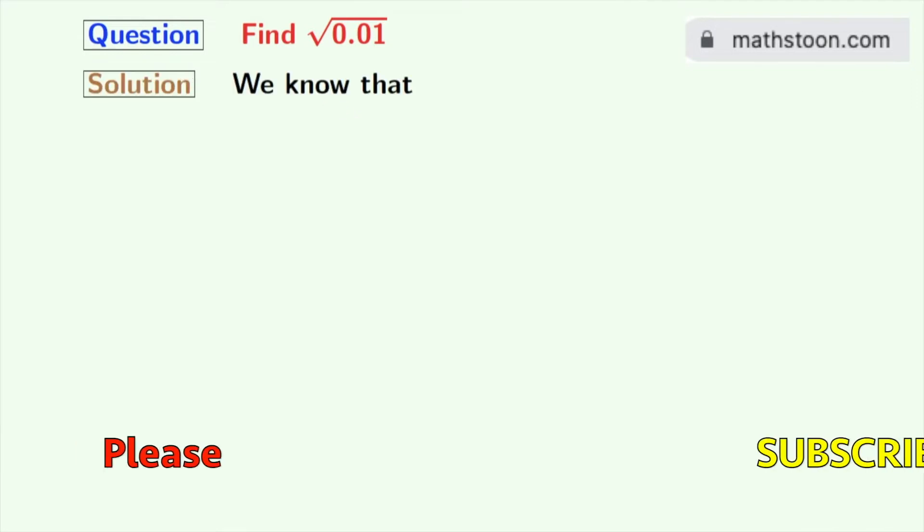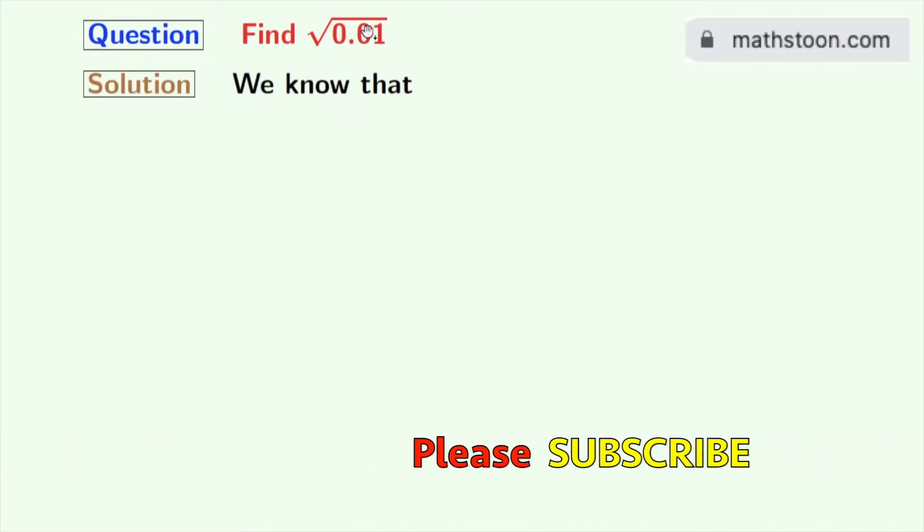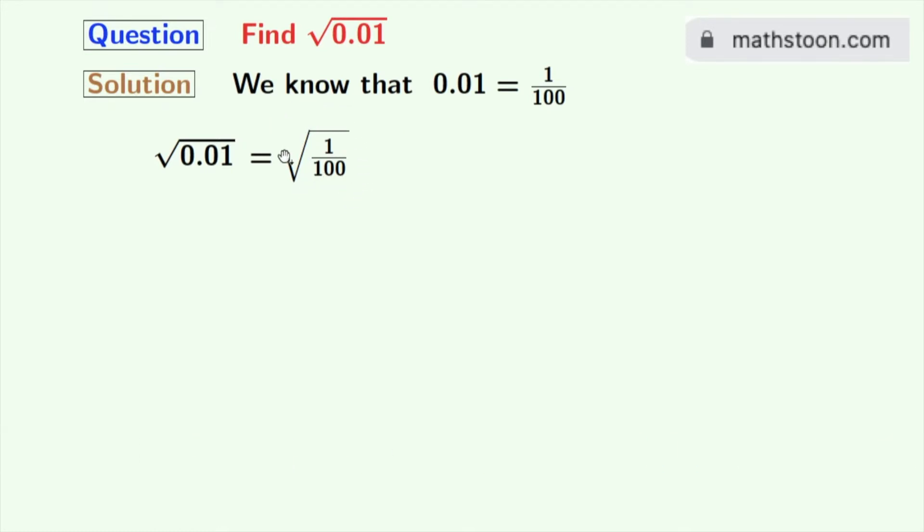Firstly, we will express this decimal number as a fraction. In that case, 0.01 would be 1 by 100. Now if we take the square root on both sides, we get square root of 0.01 equals square root of 1 by 100. Now we will rewrite this fraction.